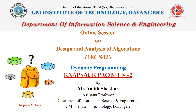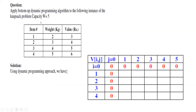In this session, we shall take up one more example to discuss the concept of the knapsack problem, solving it by following the approach of dynamic programming. Consider the provided question: apply the bottom-up dynamic programming algorithm with the following instance of the knapsack problem. The capacity is five and four items are given, but this time the weights and the values are changed. The weights and corresponding profits of each object are given.